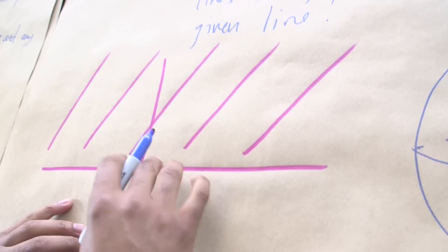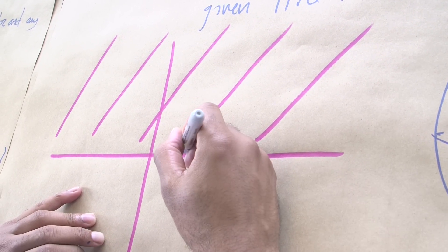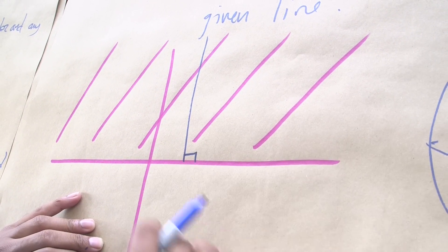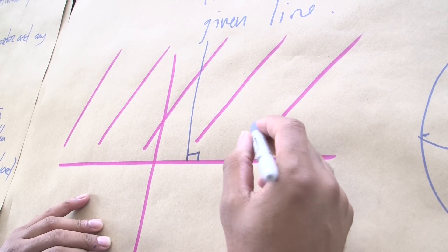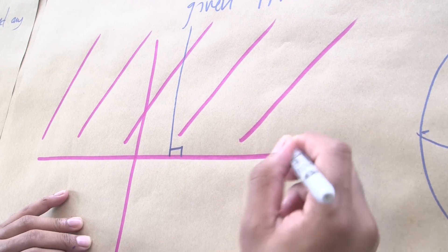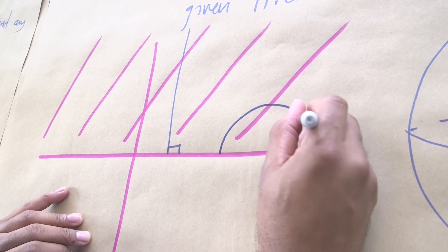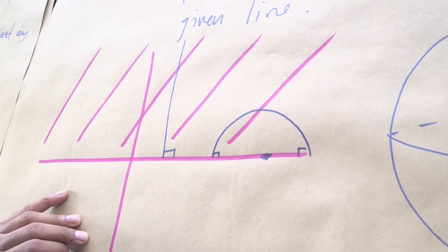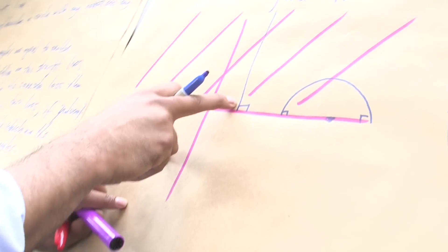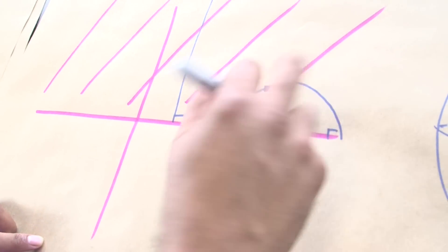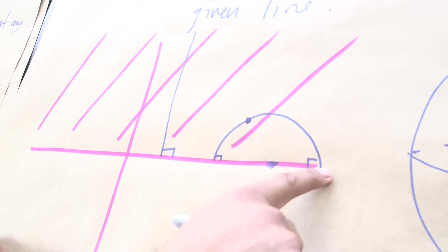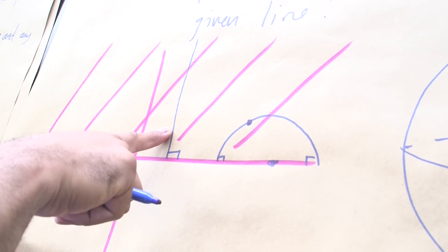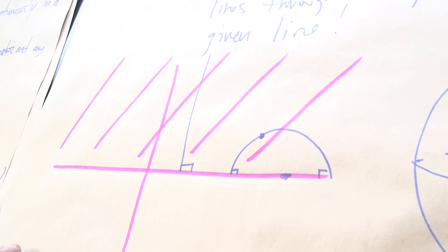In a hyperbolic plane, in this model with a hyperbolic metric, straight lines look like Euclidean vertical lines that intersect this boundary at 90 degrees, or Euclidean circles centered on the real line — centered at the real line means they intersect at 90 degrees. So these are straight lines in hyperbolic space. Let's take this as our given straight line, and this point as the point not on the straight line. We've drawn one straight line parallel to the given one — parallel in that they don't intersect.